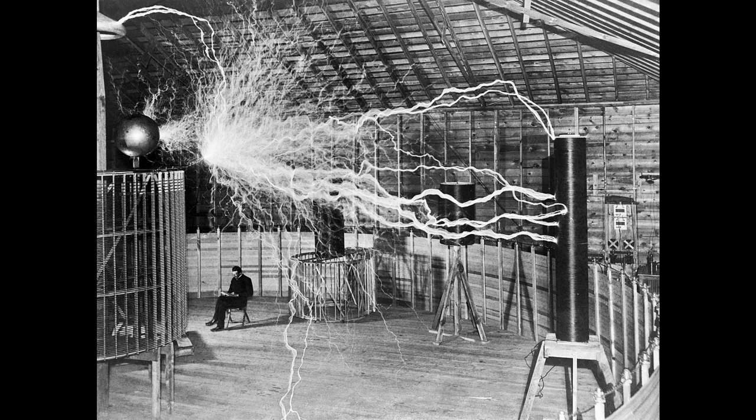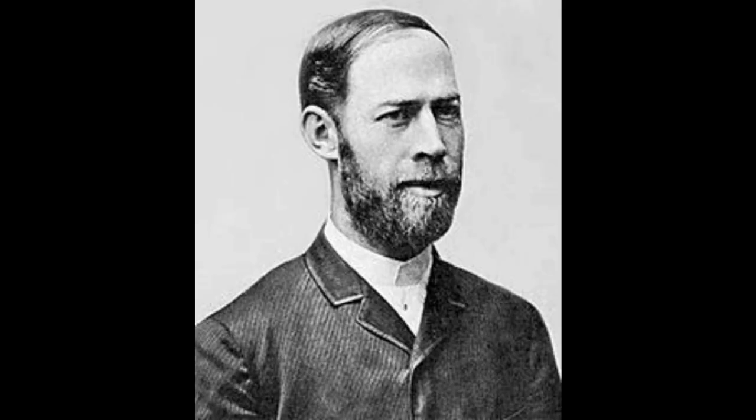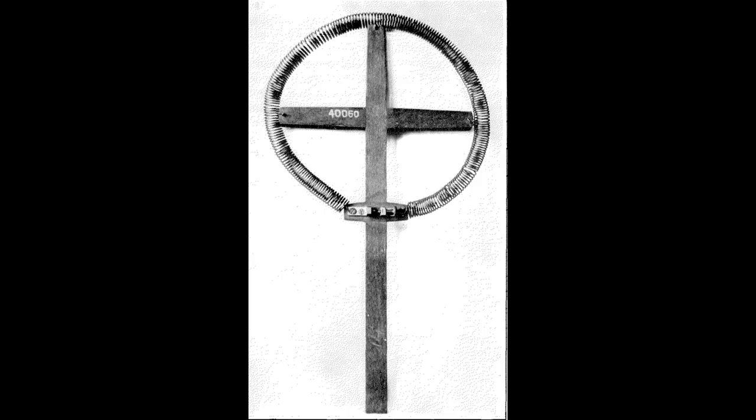Central to the project was a large coil, which has later become to be known as the Tesla coil. It began its development in 1889 after Tesla had been to the Paris exhibition and learned of the work of Heinrich Hertz and his experiments that proved the existence of electromagnetic radiation, including radio waves.